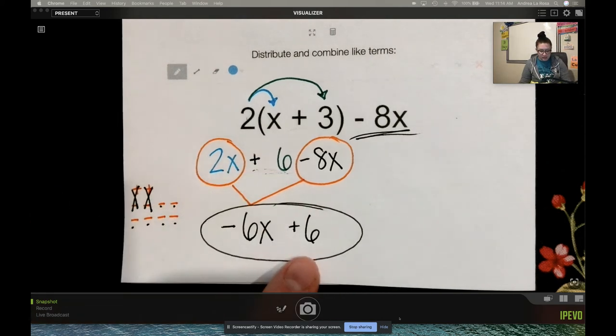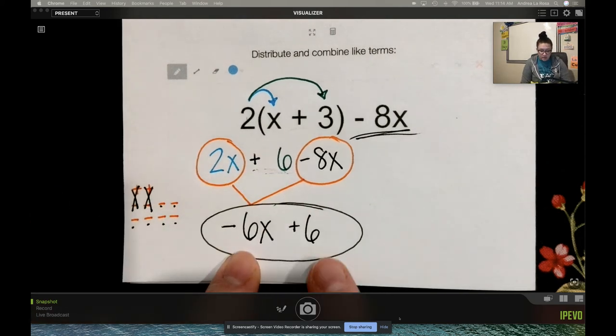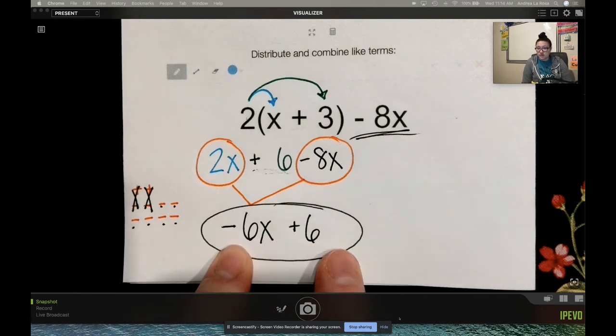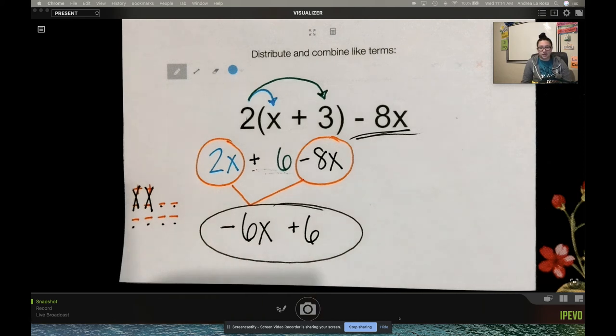I can't combine that 6 with that negative 6x, because this doesn't have any x's with it. It's just a plain number. These have variables, this doesn't, so I can't combine them. They're not friends.